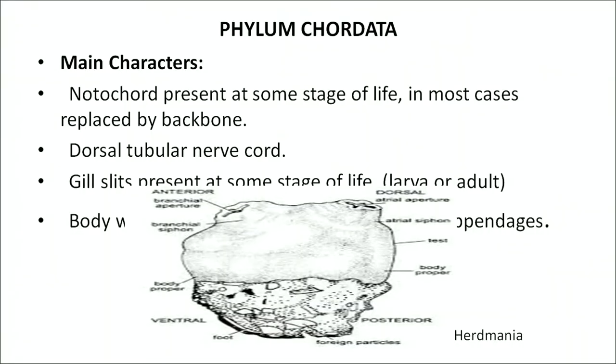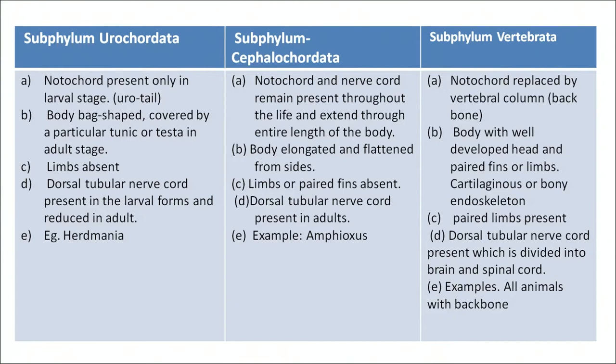The next phylum is phylum Chordata. The main characteristic is that notochord is present at some stage of life — in most cases it is replaced by a backbone. The dorsal tubular nerve chord is also present. Gill slits are present at some stage — larval or adult. Body has a head and trunk with two pairs of appendages. It has three subphyla: Urochordata, Cephalochordata, and Vertebrata. In subphylum Urochordata, notochord is present only in the larval stage; the body is sac-shaped covered by a tunic or test in the adult stage.